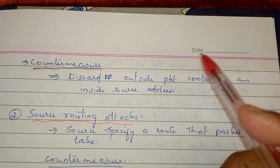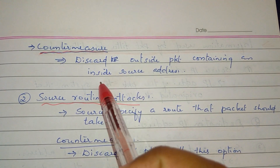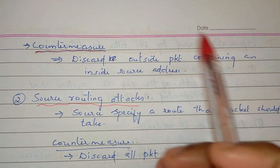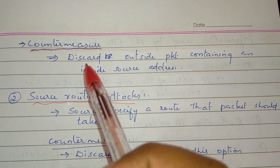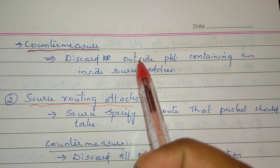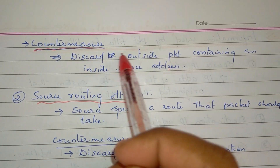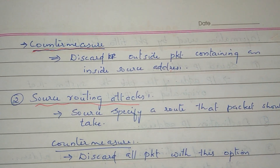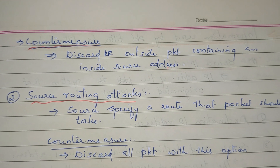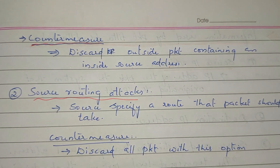To counter IP Address Spoofing, discard any outside packet that contains an inside source address. Any IP packet coming from outside with an internal source address should be discarded. This eliminates the IP Address Spoofing attack with the help of the packet filtering router.